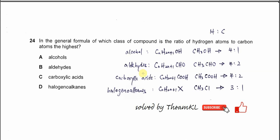Question 24. In the general formula of which class of compound is the ratio of hydrogen atoms to carbon atoms the highest? We need to find out the general formula and use one example to get the ratio.